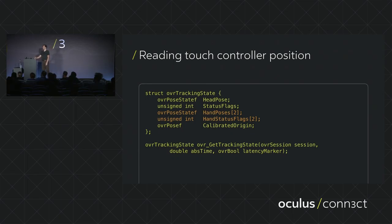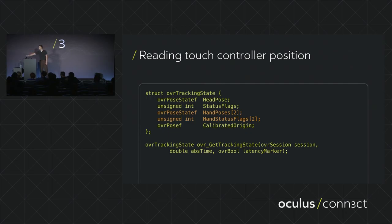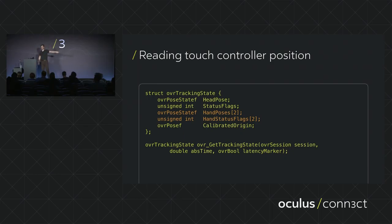In addition to reading buttons, you can also read position. If you've used this API before, you'll recognize OVR get tracking state. For touch we've added two additional parameters: hand poses and hand status flags. Hand poses tells you where in space and what direction the controllers are facing — this is more precise than standard controller IMUs, which simply indicate acceleration. Hand status flags indicates whether the controller is present and being tracked, so you can tell if the controller has been thrown in a drawer.